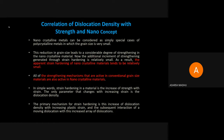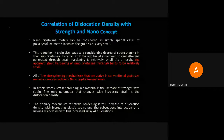In nanocrystalline material, the grain size is very small and the number of grains is increasing. There will be more grain boundaries, and the grain boundary plays an important role — a grain boundary will obstruct or block the dislocation movement.